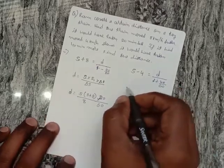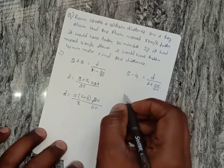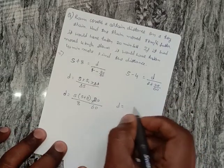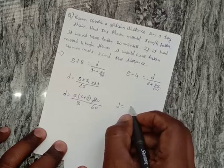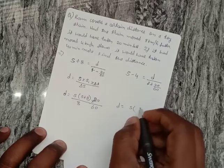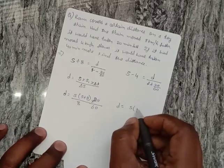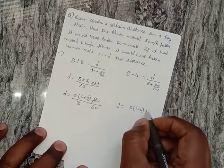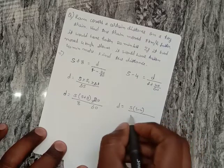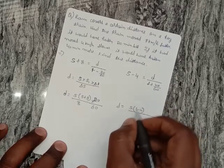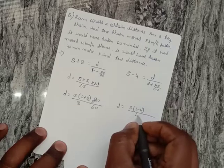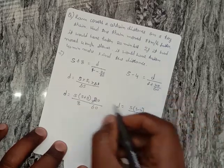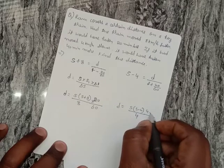Similarly, for the second equation: D equals, with initial speed S, new speed S minus 4, change in speed 4 km, and change in time 40 minutes.